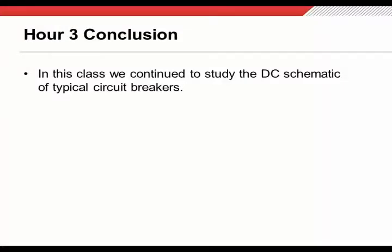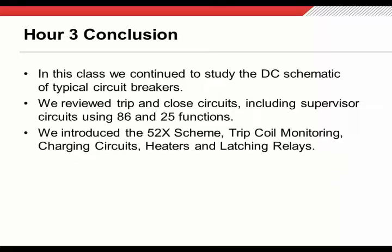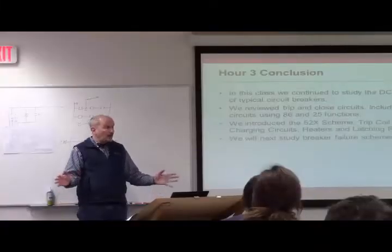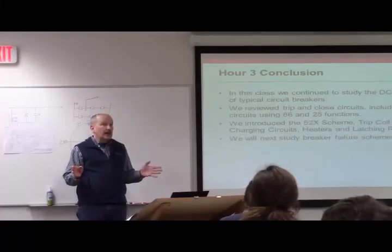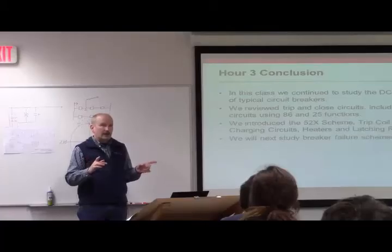In this class, we've spent a fair amount of time going through the DC schematic of a typical circuit breaker. We started with where we had been last week and then added a layer of detail on that. And we also spent some time talking about some features of our trip and close circuits that actually aren't in the circuit breaker, but they're back in the control building. We also introduced a couple other features including trip coil monitoring, charging circuits, heaters, and then we talked about the latching relay. And next week, we are going to kind of wrap up our study of circuit breakers. And we're going to talk about breaker failure schemes. Breakers are incredibly important within the power grid. But occasionally, despite our best efforts, they don't work. And it is not okay to have a breaker not open if something didn't work and not clear a fault. And that's what breaker failure schemes are all about, and we will get into that next week. Alright, thank you.